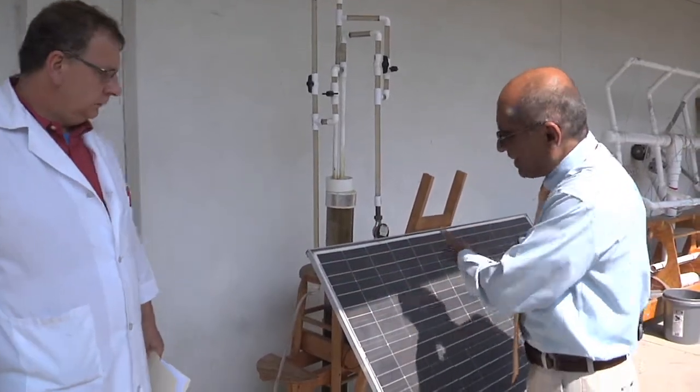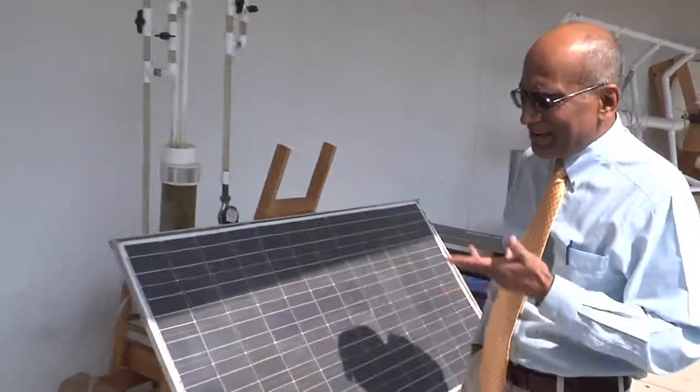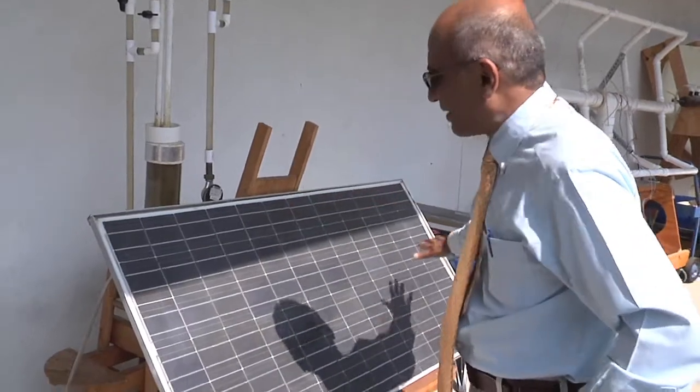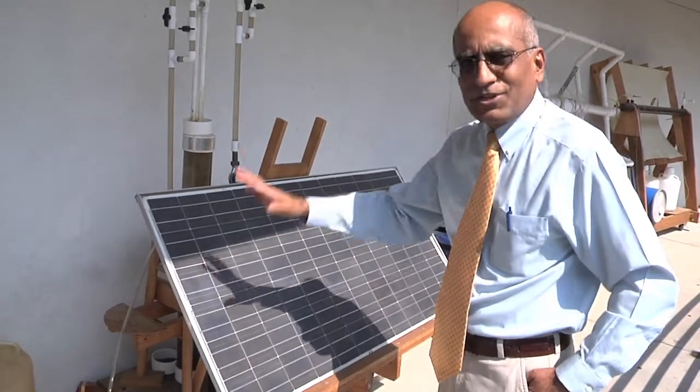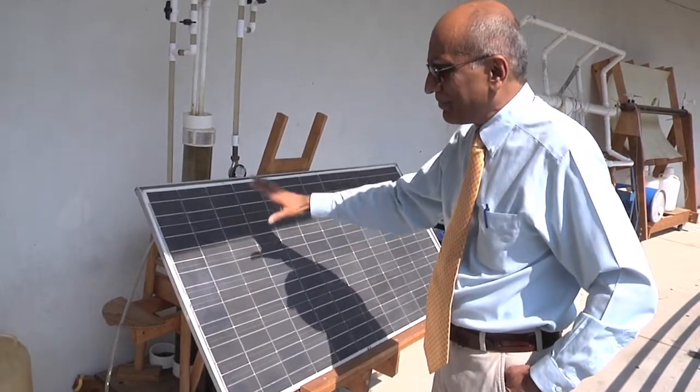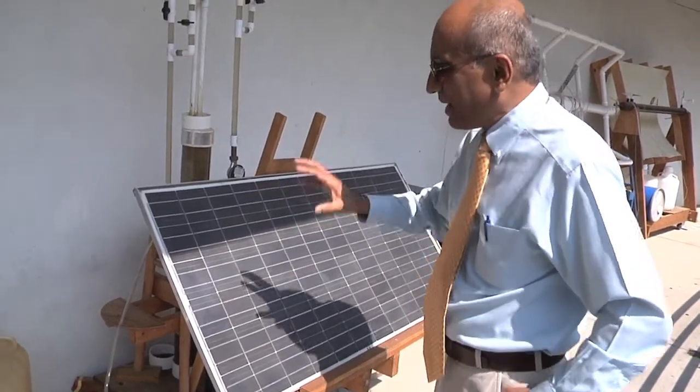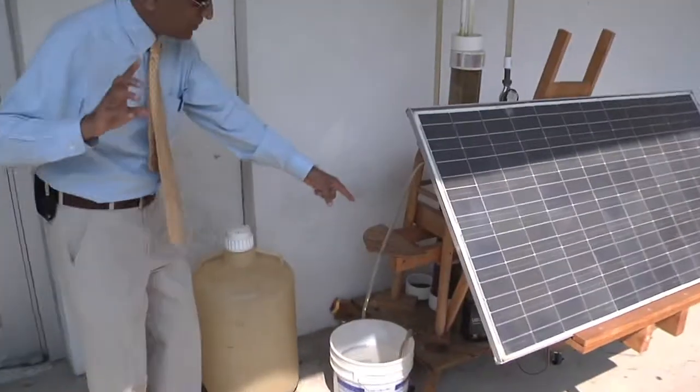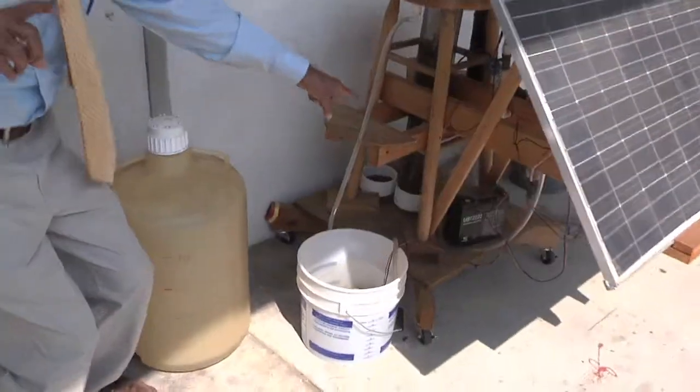What you are looking at here is a self-contained water purification system. You have a solar panel here that collects sunlight and harvests the energy from the sun. We take this energy and store it in a battery that you will see there, a small battery.